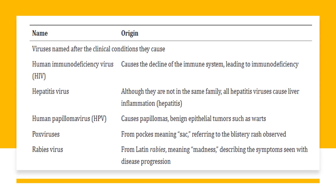Sometimes they were classified according to the clinical conditions they caused — like HIV, which is named for the immunodeficiency it causes; the hepatitis virus, named for causing liver inflammation; or the rabies virus, named after the Latin word 'rabies' meaning madness, which is a symptom of the disease.